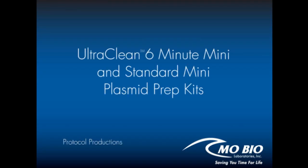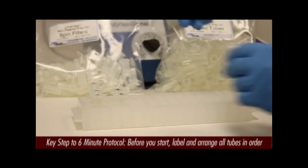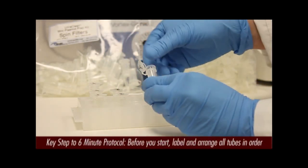This video describes how to use Mobio's 6-Minute Mini and Standard Mini Plasmid Prep Kits to isolate high-quality plasmid DNA. Grow your plasmid culture to a typical density of A600 equal to 2.0 or higher.